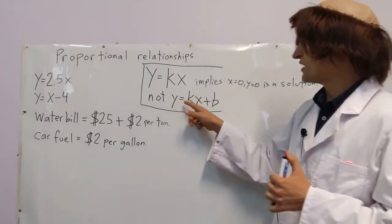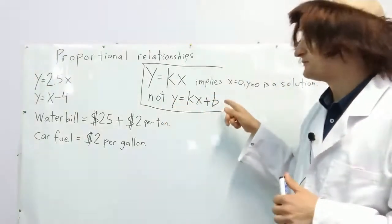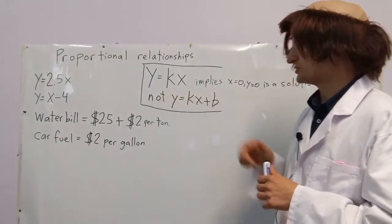If you have something like this, y equals kx plus b, this is not proportional.